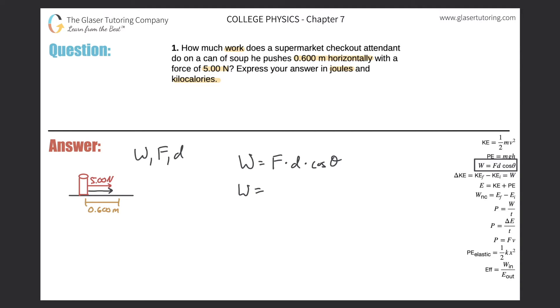So work is equal to the force that's applied to the object. So five newtons, multiplied by the distance the object travels, which would be 0.6 meters, and then multiplied by the cosine of the angle between them, which was zero.